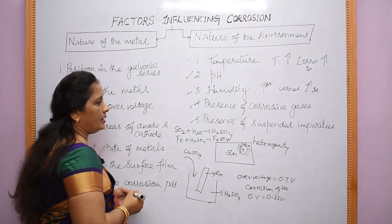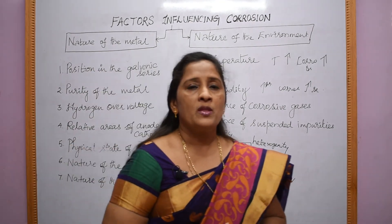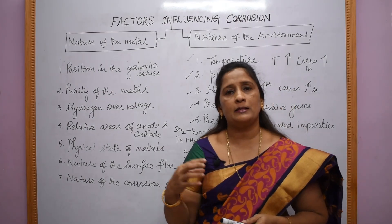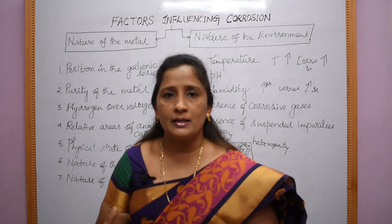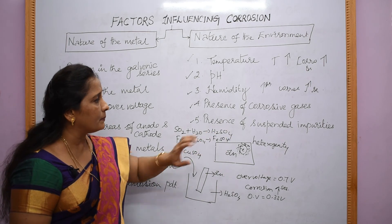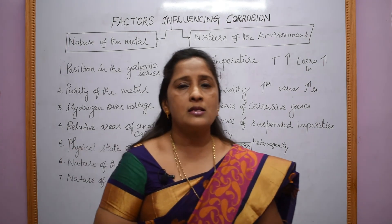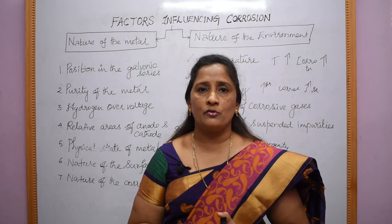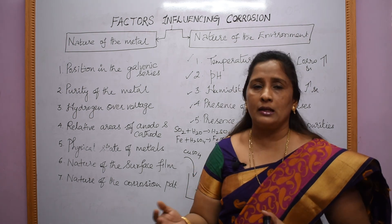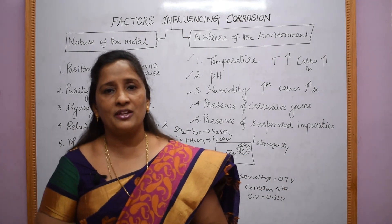The fifth environmental factor is the presence of suspended impurities such as NaCl and (NH₄)₂SO₄. The presence of suspended impurities in the atmosphere will also increase the rate of corrosion. In this class, we have discussed the factors influencing corrosion: one related to the nature of the metal and the other related to the nature of the environment. That's it for today. We will see in the next class. Thank you.